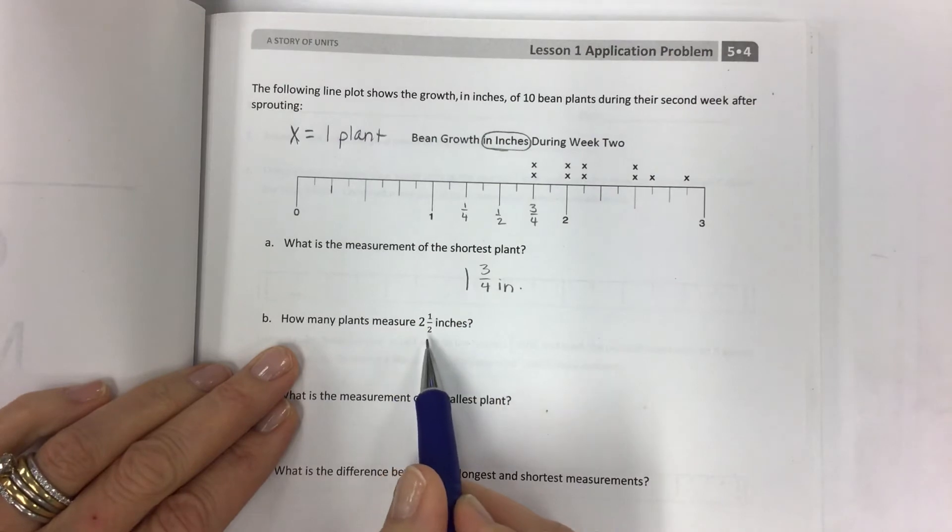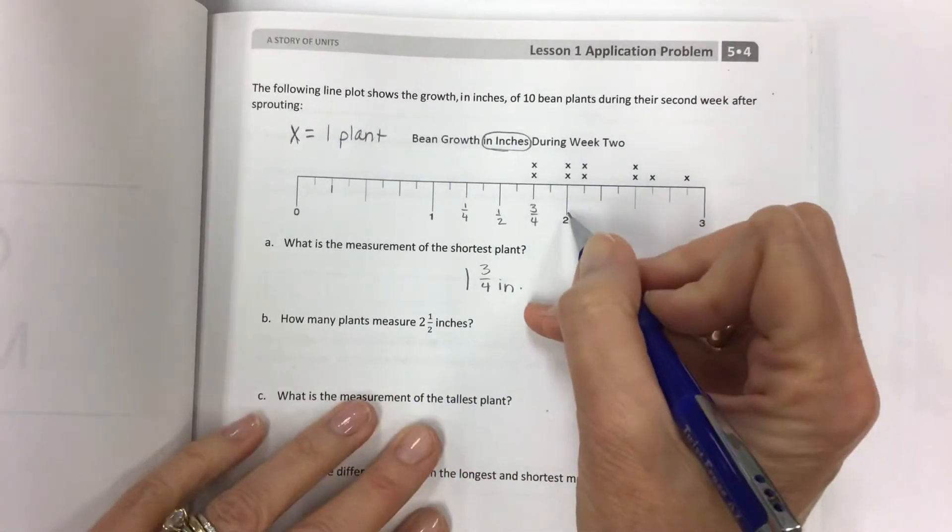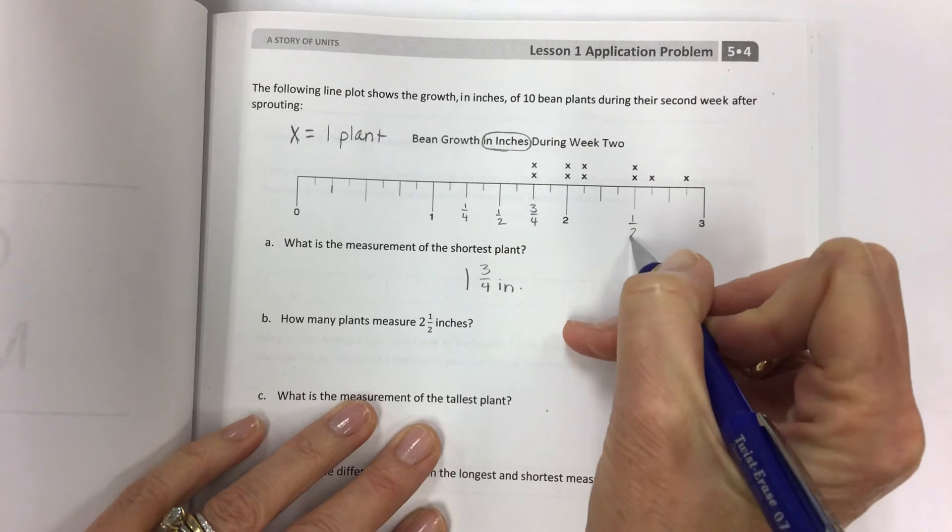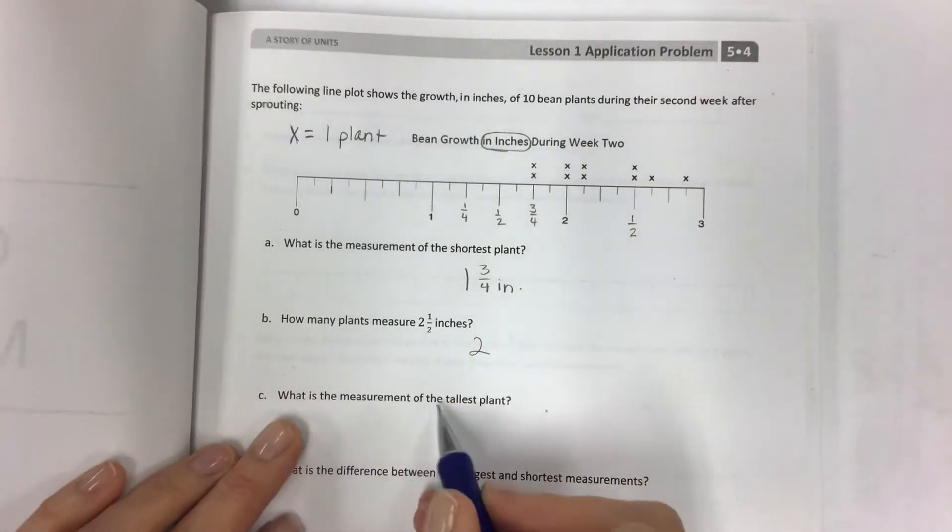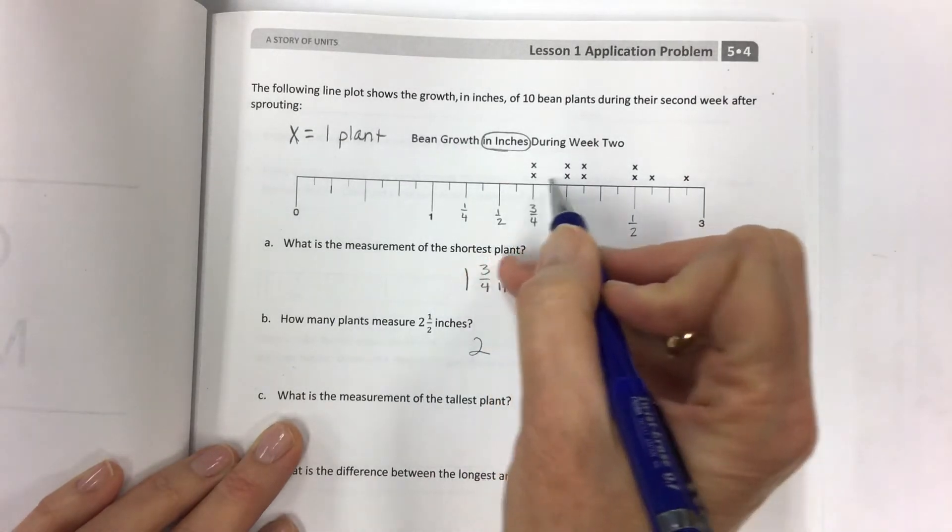How many plants measure two and a half? Again, between two and three, here's your half. So how many? There are two.